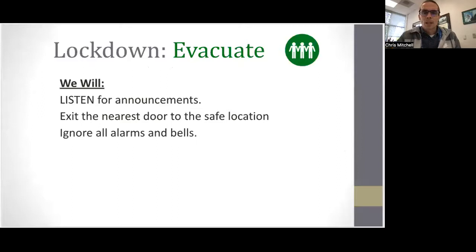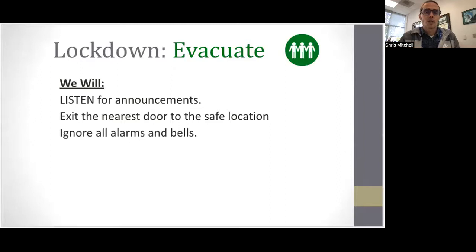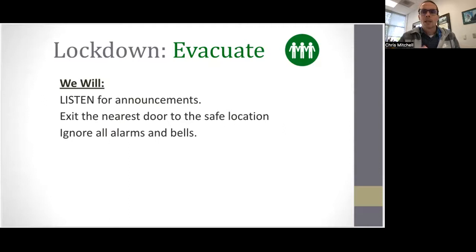So we're going to practice an evacuation. We're going to listen for the announcements, exit the nearest door to a safe location, and ignore alarms and bells. The reason we would do that in this situation is because that intruder — that harmful person — could be pulling fire alarms to try to get people to come out so that they could harm more people. So in a case where it is a lockdown, you would ignore alarms and bells and listen for a trusted voice. If I was being asked to say things that weren't accurate, I would do my best to alert people of that in the way that I speak on the announcements — though I doubt that would happen. From when an intruder came in and got me on the announcements, it would take a good two to three minutes.